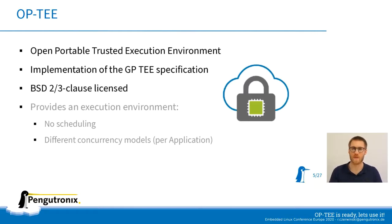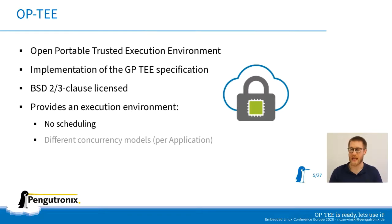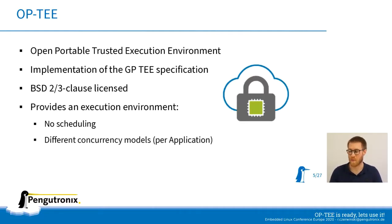OP-TEE uses a mix of BSD 2 and 3-clause licenses depending on the source files, and includes cryptographic libraries like mbedTLS or libTomCrypt. Importantly, OP-TEE is an execution environment, not an operating system — it does not provide scheduling or preemption. A processor running OP-TEE will execute a task until finished or sent back to the normal world. Concurrency models are per-application: your application can be entered multiple times to process requests in parallel, or restricted to one actor at a time.